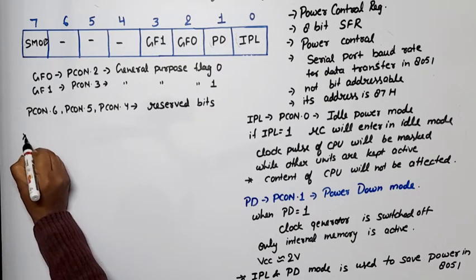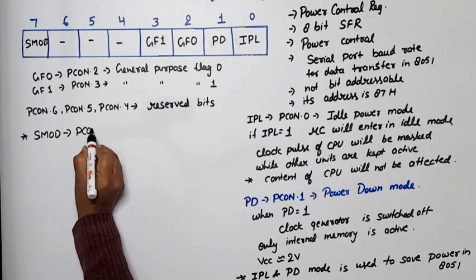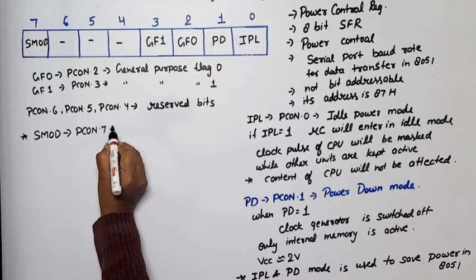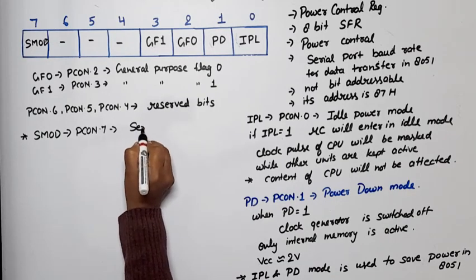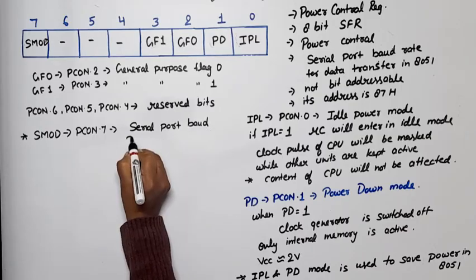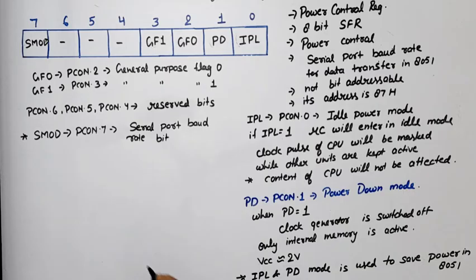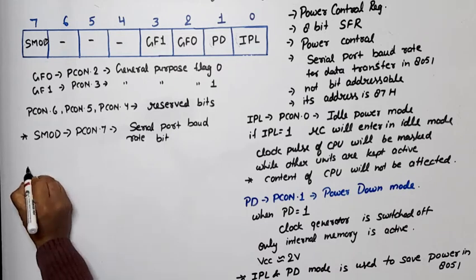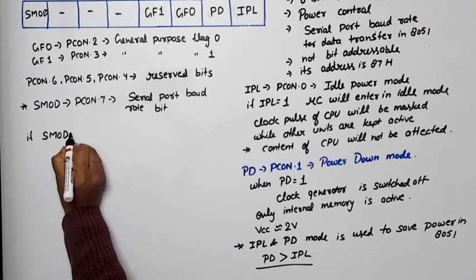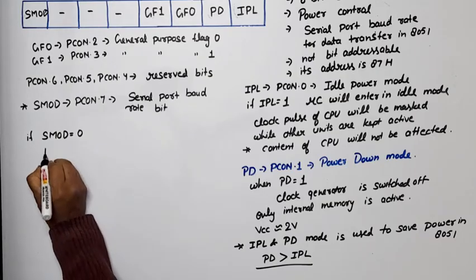Now next, last bit is SMOD which is also called PCON dot 7. This is serial port baud rate bit. Means this is used to control the baud rate of serial port. So how this will control? If SMOD is equal to 0, then what is the baud rate? Then baud rate is given by machine cycle frequency divided by 32.